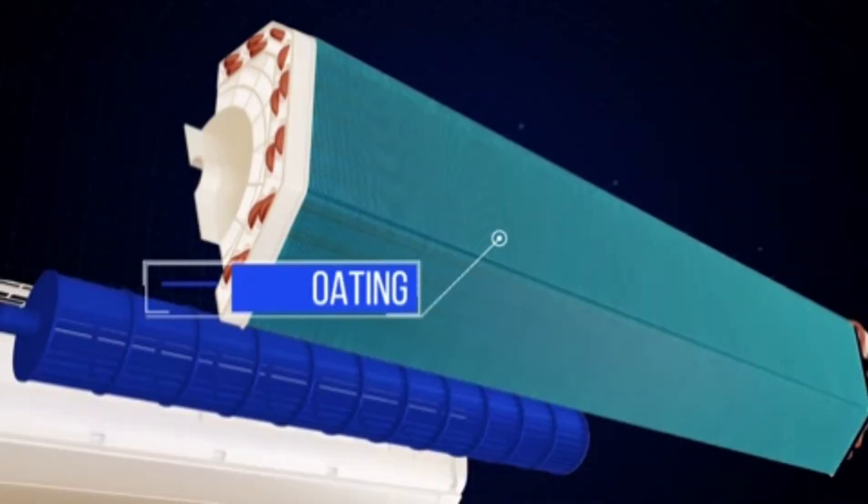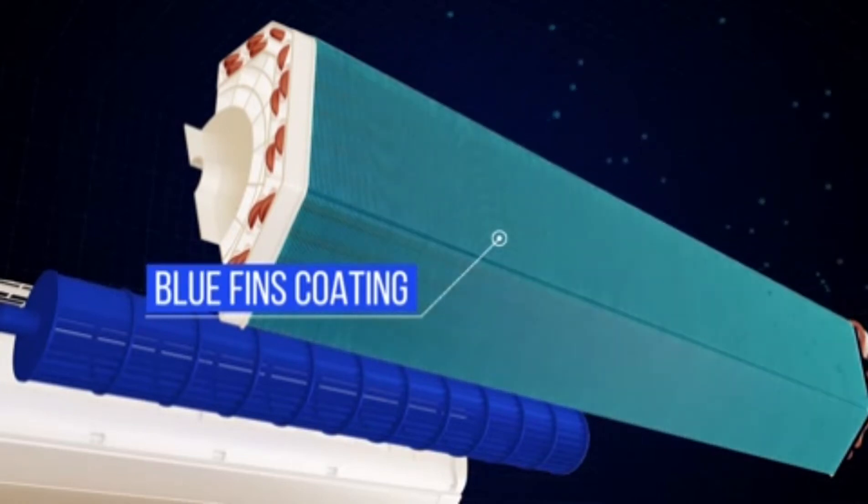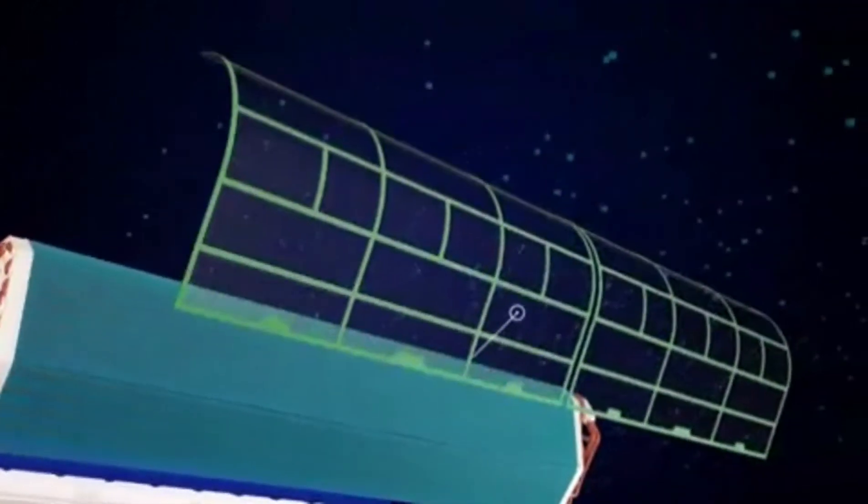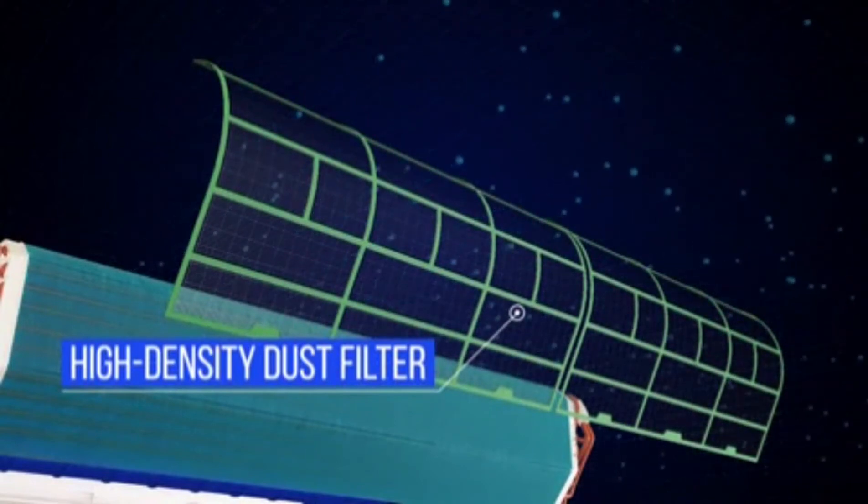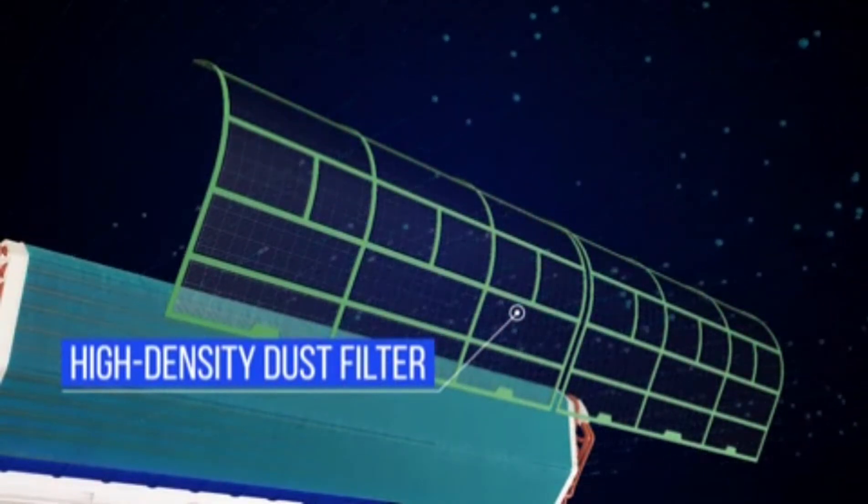Forbes health conditioners have a unique blue fin coating which protects the condenser coil from the damaging effects of humidity and moisture. High-density dust filter removes dirt, dust, pet hair and other physical impurities from the air.